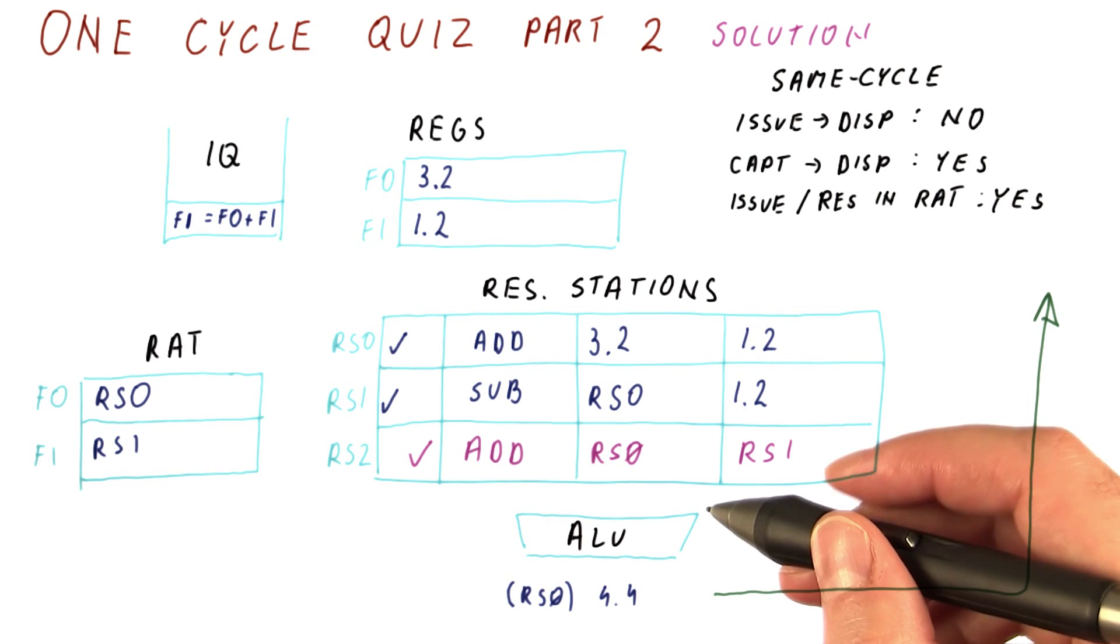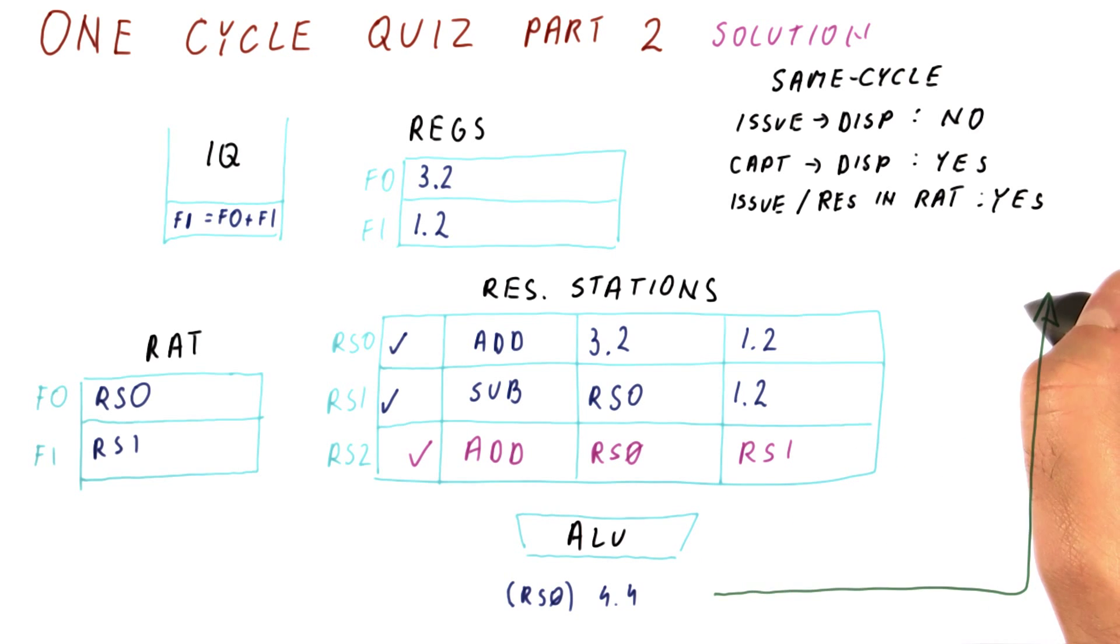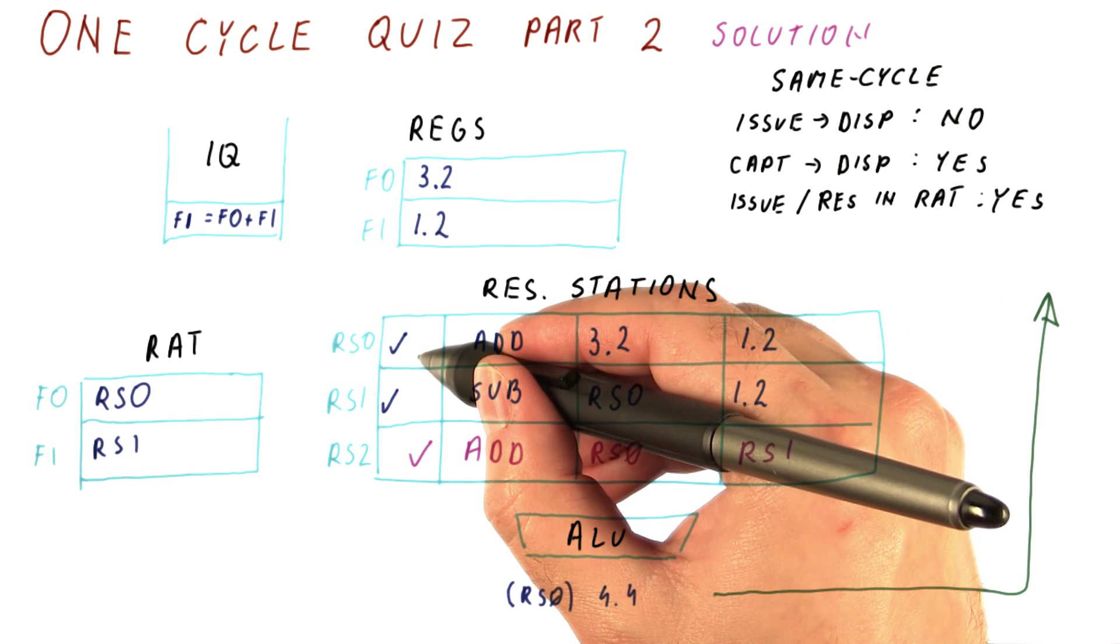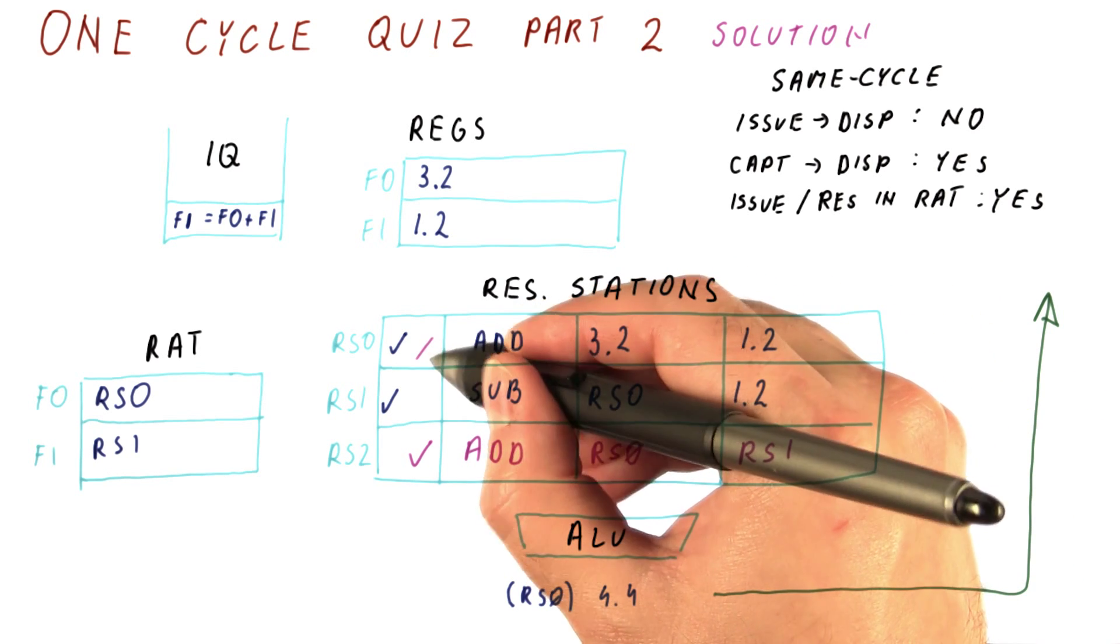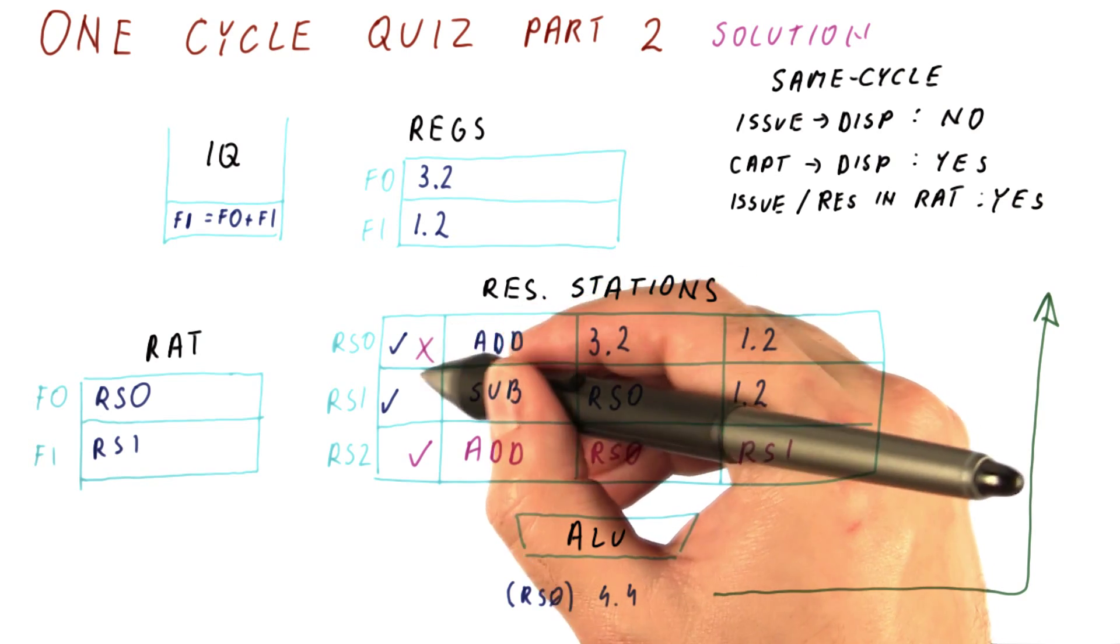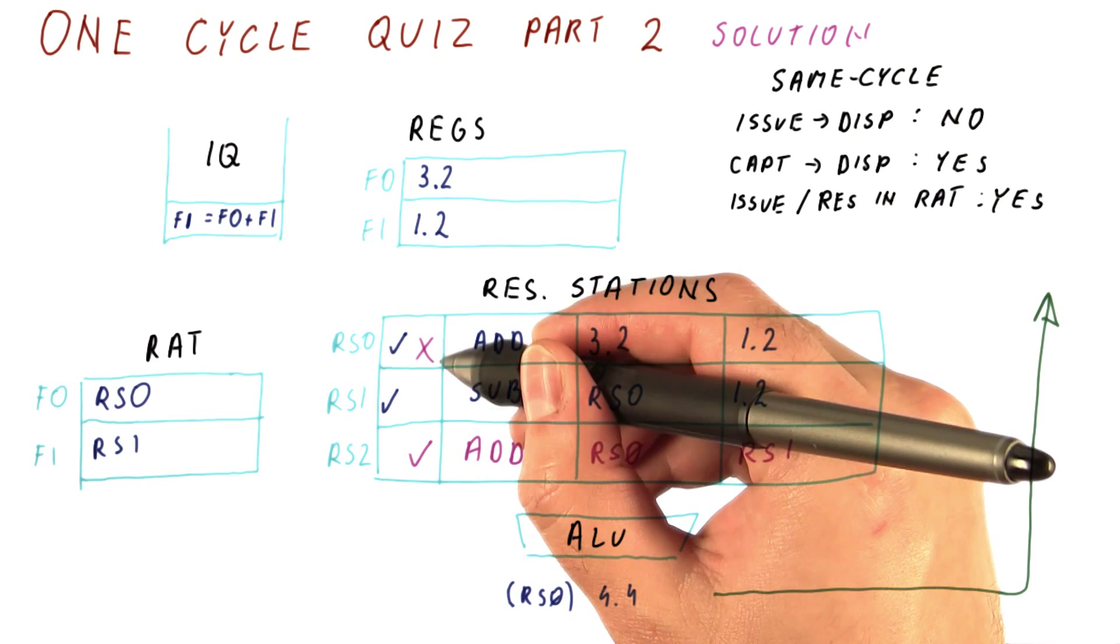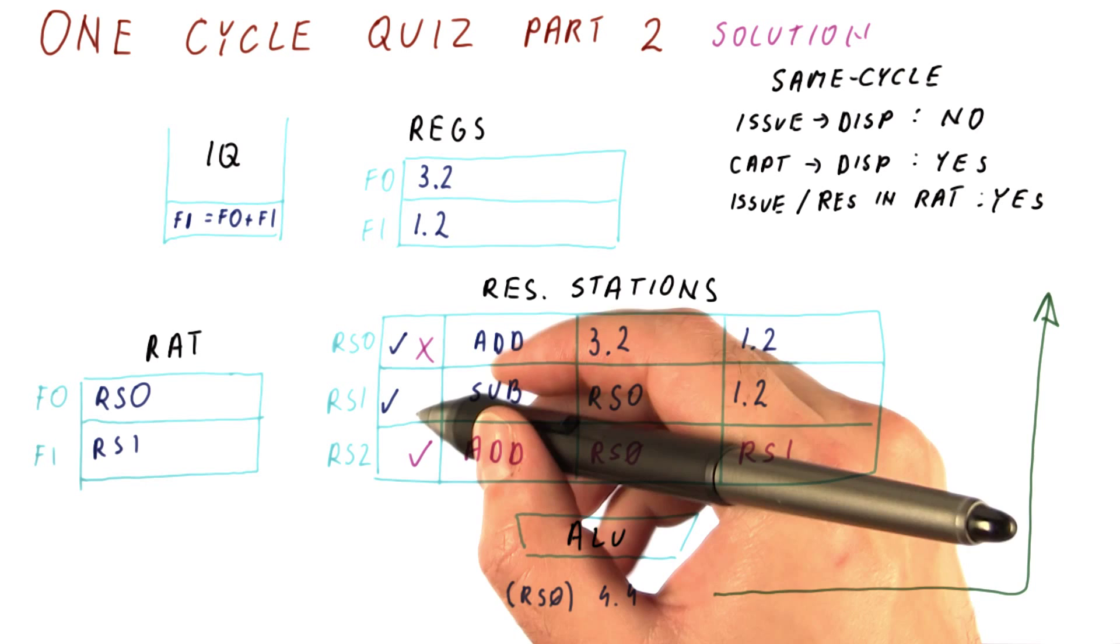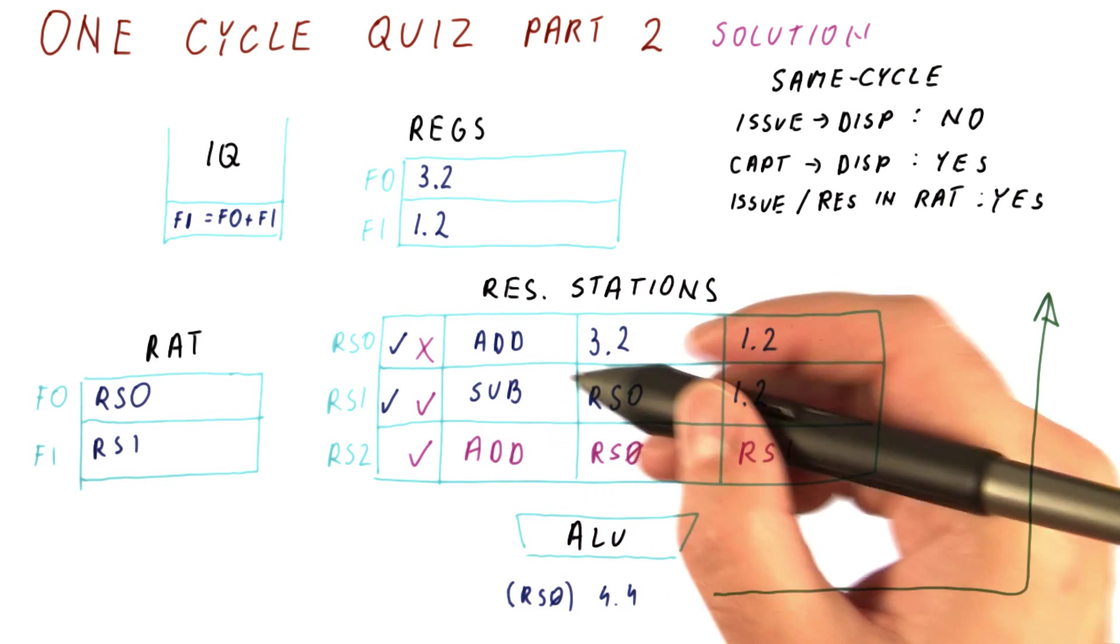We also need to consider what happens when a result is broadcast. What happens then is that this instruction frees its reservation station. So this one is not going to be occupied anymore at the end of this cycle. I put an X here, but what you should have done is not select this one is still busy. This one, of course, remains busy.